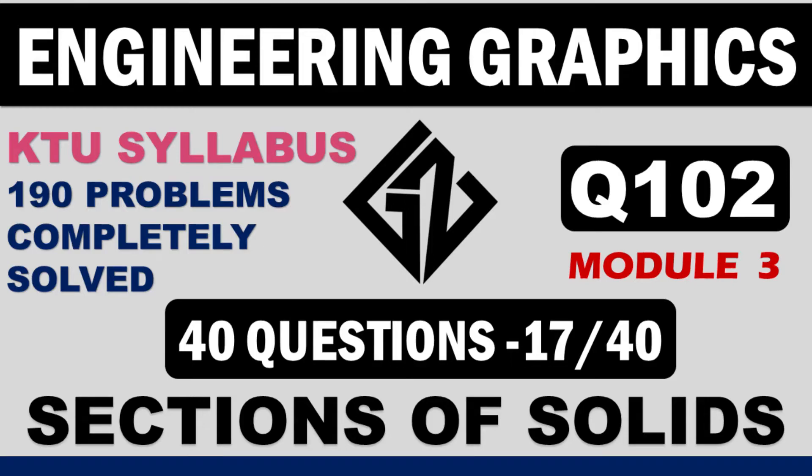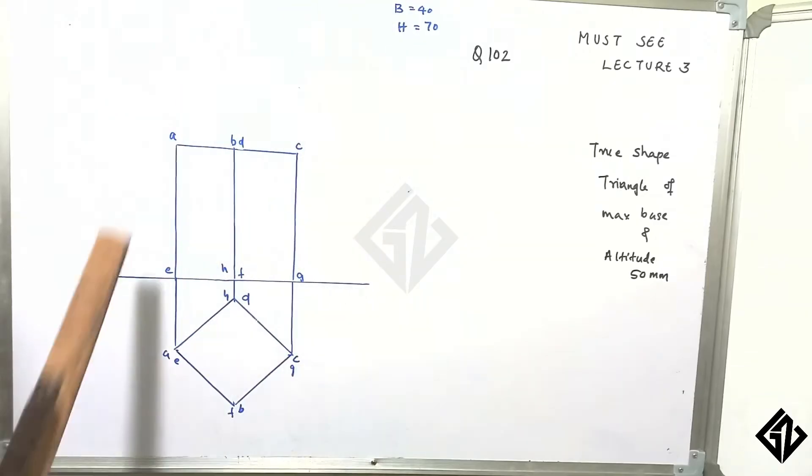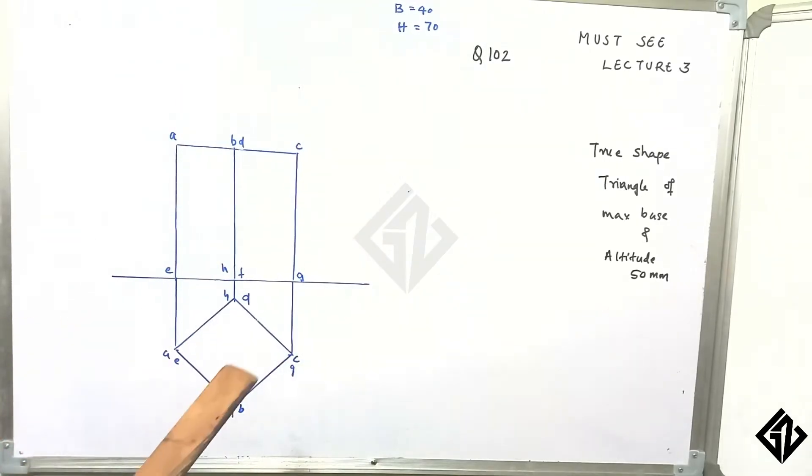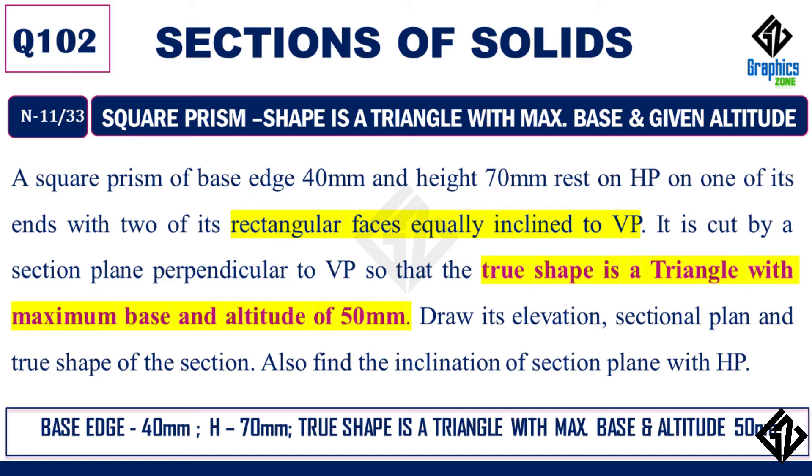Question number one. We have a square prism of base 40 and height 70 cut by an auxiliary inclined plane. The prism is resting on its base such that two of the base edges are equally inclined to VP. The true shape is given, but the cutting angle is not given.